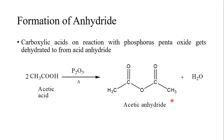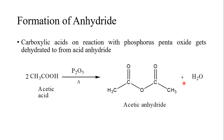The fourth reaction is the formation of anhydride. Carboxylic acid on reaction with phosphorus pentoxide gets dehydrated to form the acid anhydride. Here we take 2 moles of acetic acid and react with phosphorus pentoxide at delta temperature. Then we get acetic anhydride as the product, and one water molecule is removed.